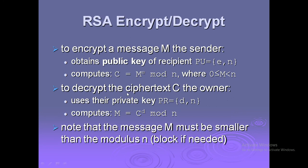To decrypt the ciphertext C, the owner uses the private key PR = {d, n} and computes the original message using M = C^d mod n. Note that the message M must be smaller than the modulus n.